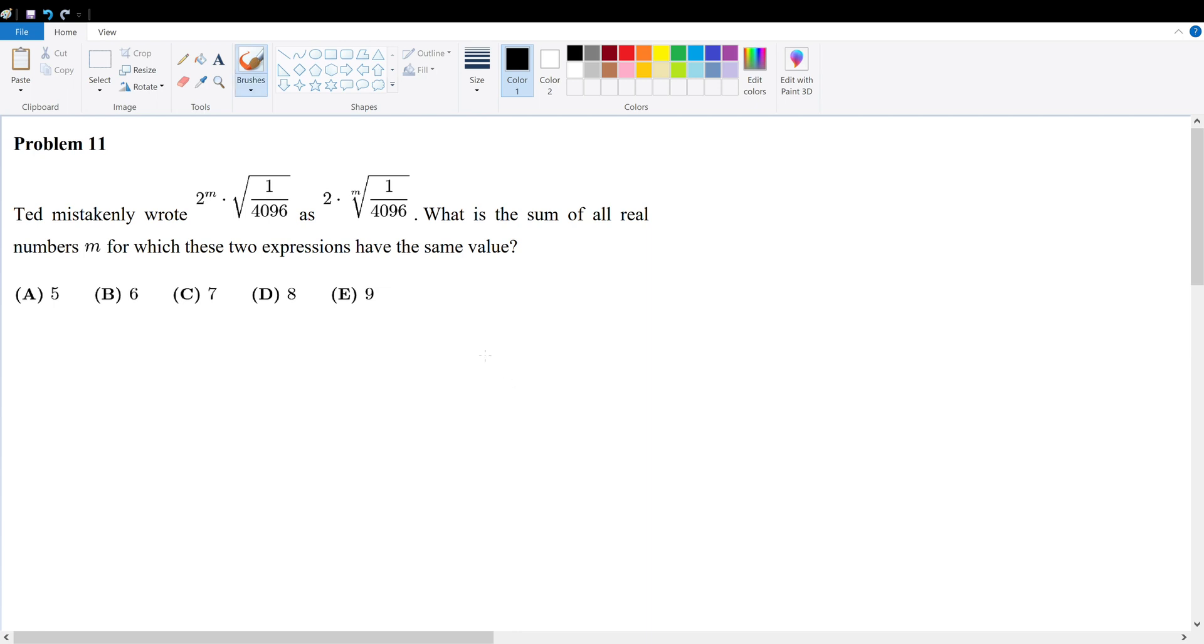So first of all write down what it's trying to say. 2^m, don't get confused so put a parentheses around it, times the square root of 1 over 4096 must give you 2 times the square root taken to the mth root of 1 over 4096.